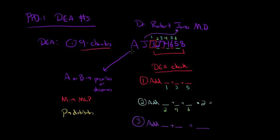The first letter is going to be an A or a B for a prescriber or a dispenser, an M for a mid-level practitioner such as a PA or a nurse practitioner, and then a P if they're a distributor. So that's what the first letter depicts.